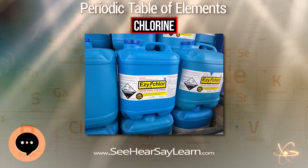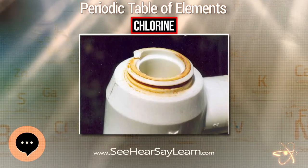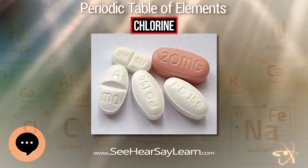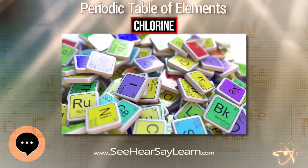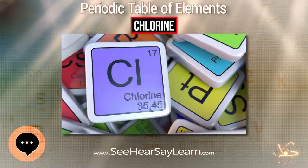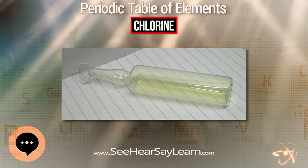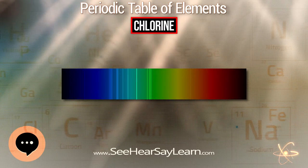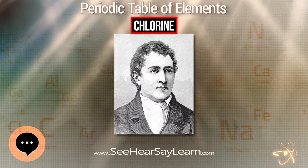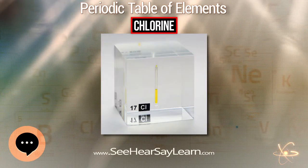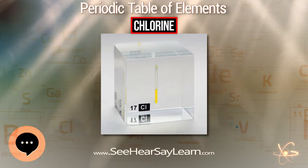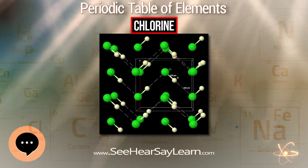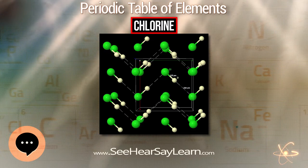Dichlorine heptoxide is the anhydride of perchloric acid and can readily be obtained from it by dehydrating with phosphoric acid at −10°C, then distilling the product at 35°C and 1 mmHg. It is a shock-sensitive, colorless oily liquid and the least reactive of the chlorine oxides — the only one not to set organic materials on fire at room temperature. It may be dissolved in water to regenerate perchloric acid, or in aqueous alkalis to regenerate perchlorates. However, it thermally decomposes explosively by breaking one of the central Cl–O bonds, producing radicals ClO₃ and ClO₄ which immediately decompose to the elements through intermediate oxides.